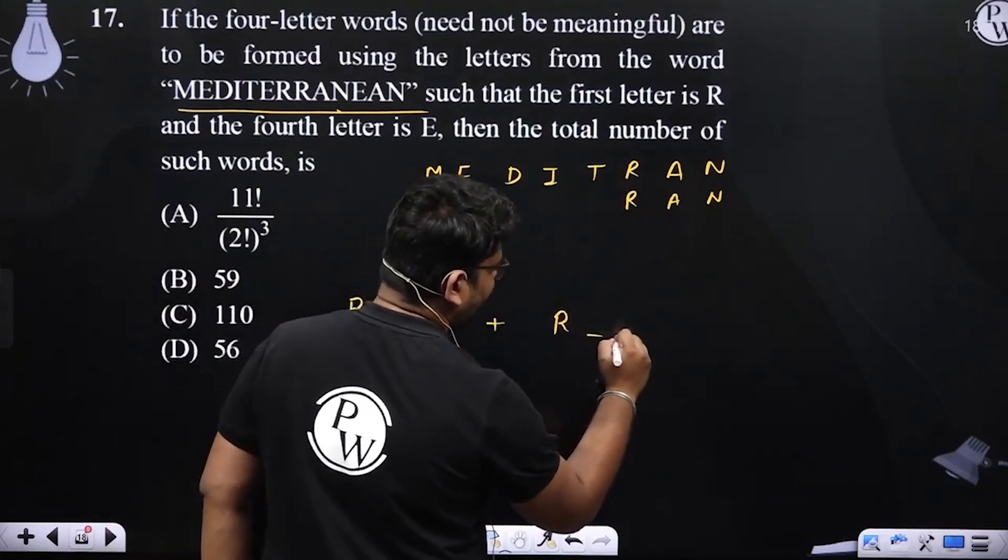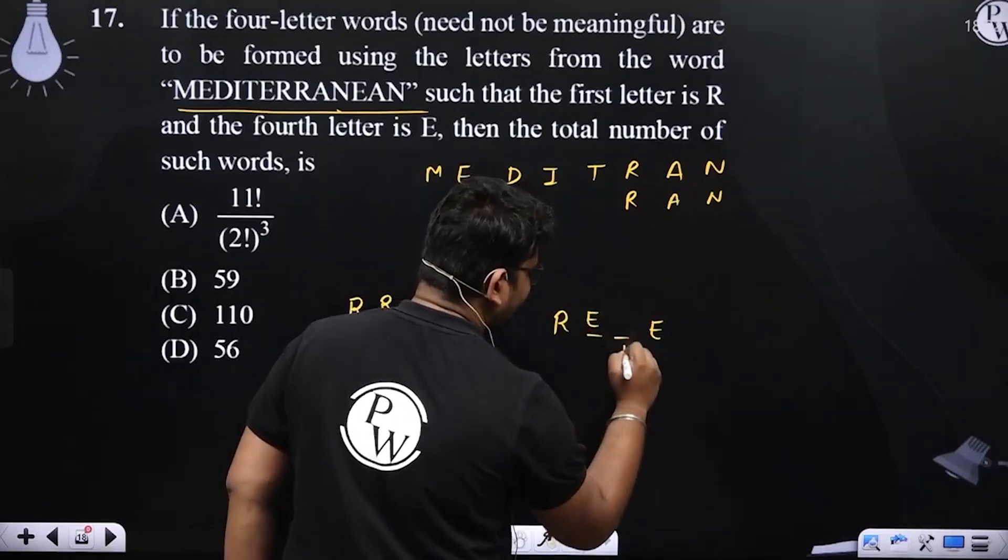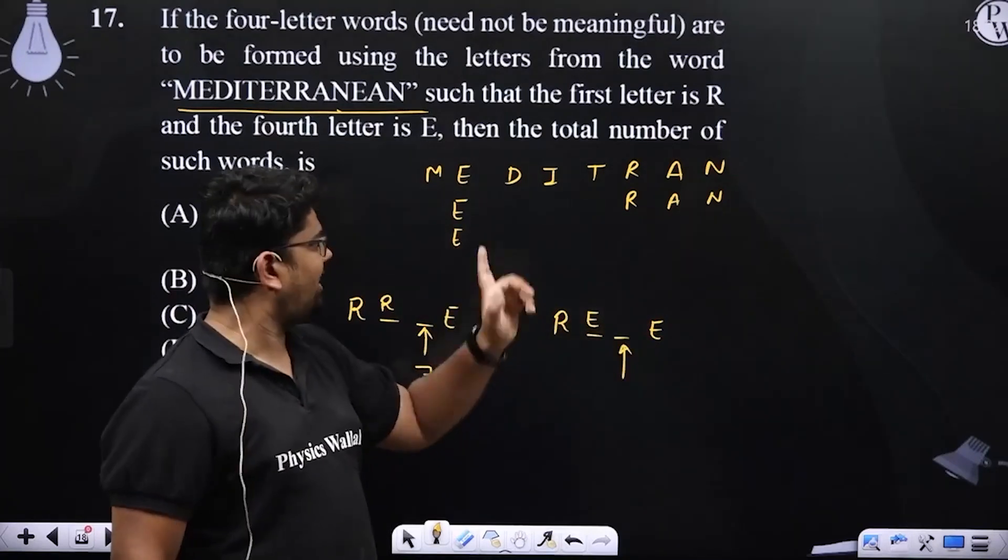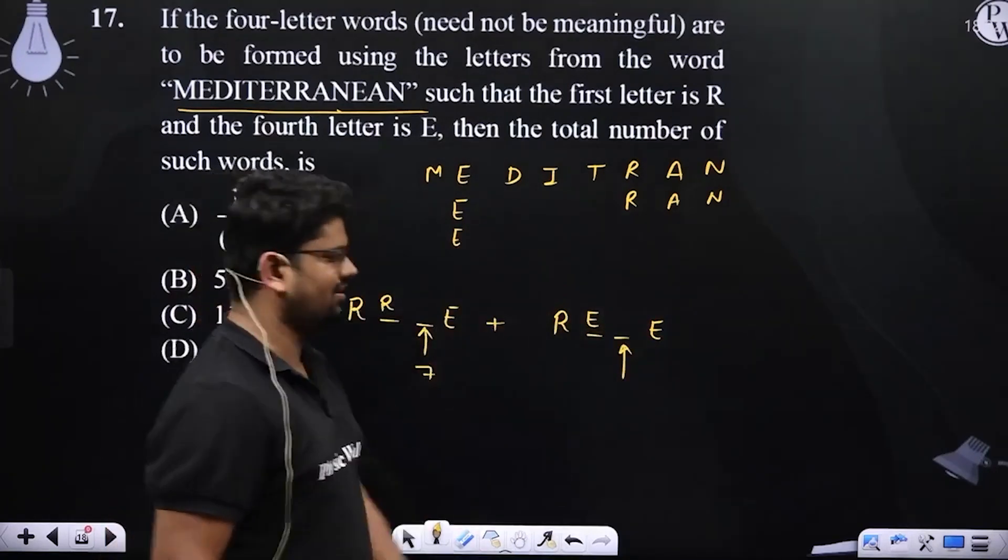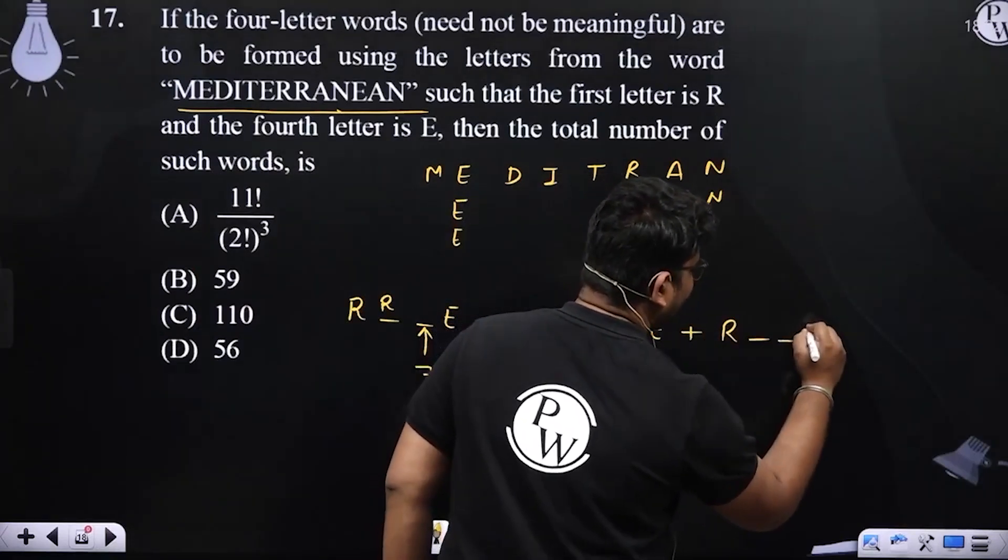Plus, this is R and here is E. I am going to write here. If you look at this place, we can write two Es, but there are three Es. We can write two Rs. So this is R. Then we have to write this place.